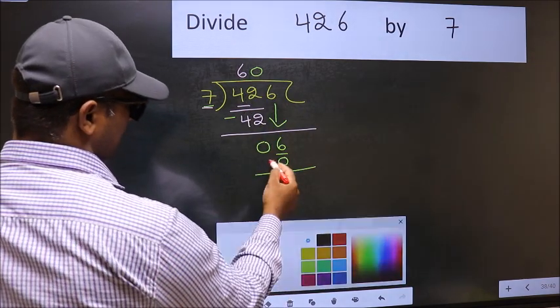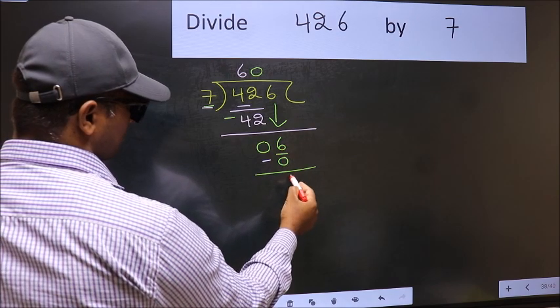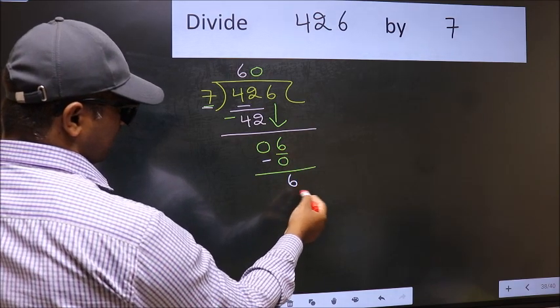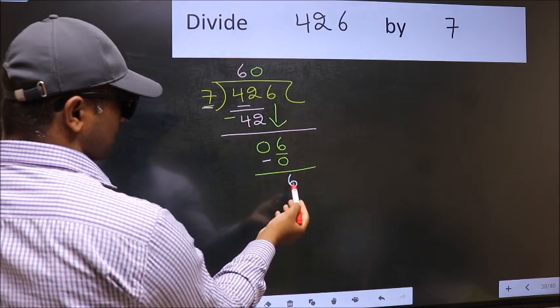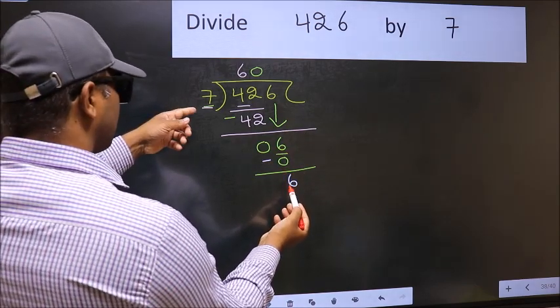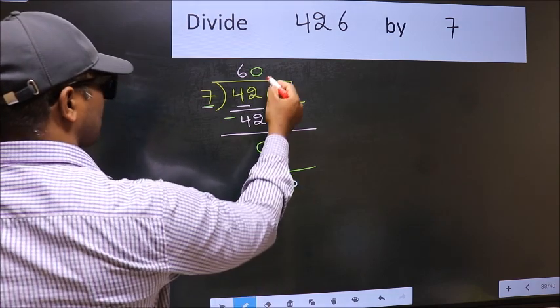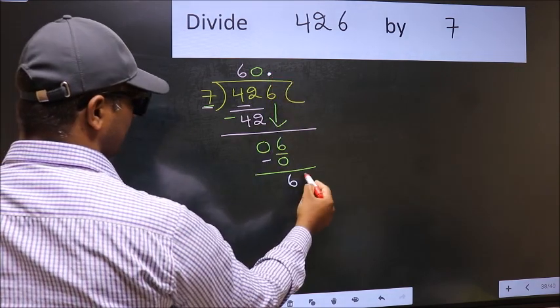Now you should subtract. 6 minus 0, 6. Over here, we did not bring any number down. And 6 is smaller than 7. So now you can put dot and take 0.